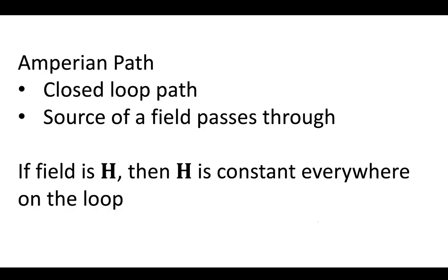So for magnetostatics, if the field is H, then H is constant everywhere on the loop, and the source of that field H is a current I, which is at some constant current, since we're in magnetostatics.